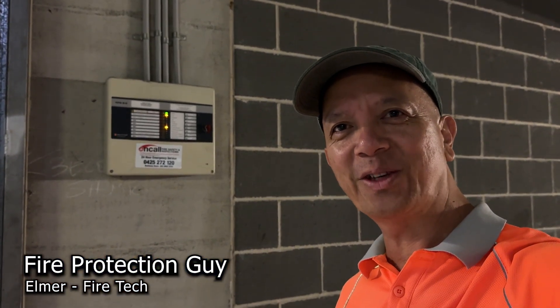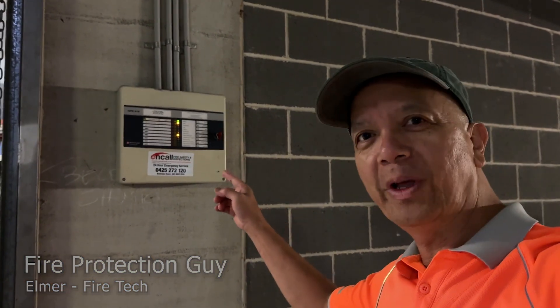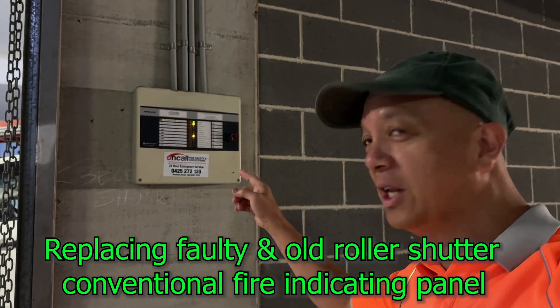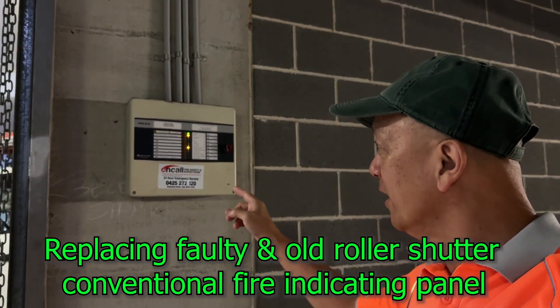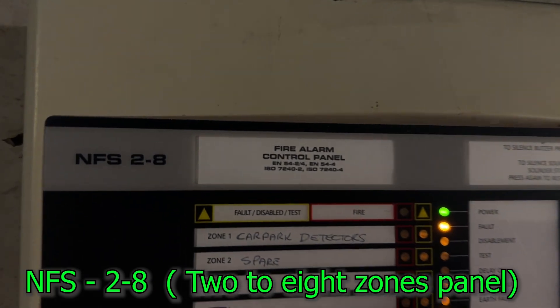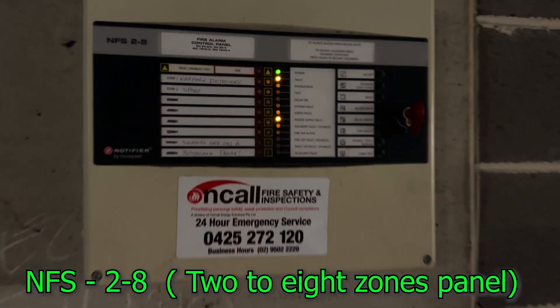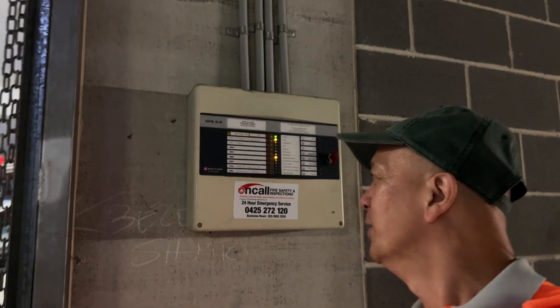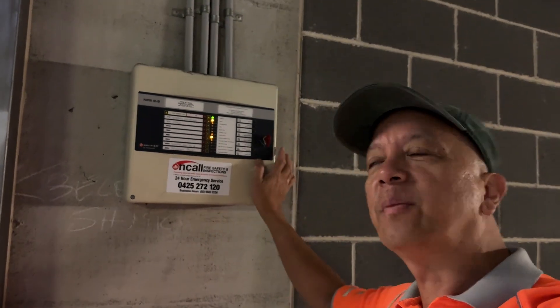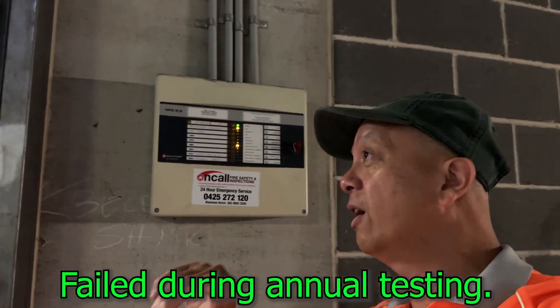Hi guys, Elmer your fire protection guy. We're going to replace this old conventional fire panel, the NFS 2.8. The problem in this fire panel is that all the detectors are not operating. It's a zone card problem. There is no power in the conventional zone circuit.